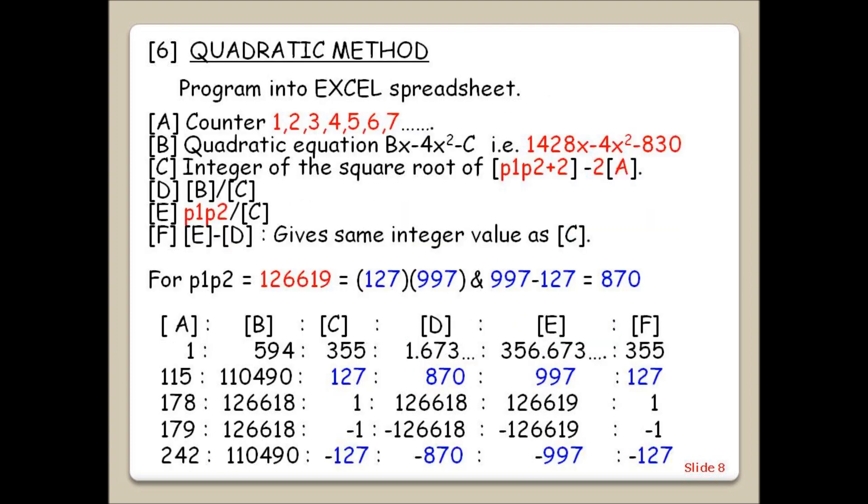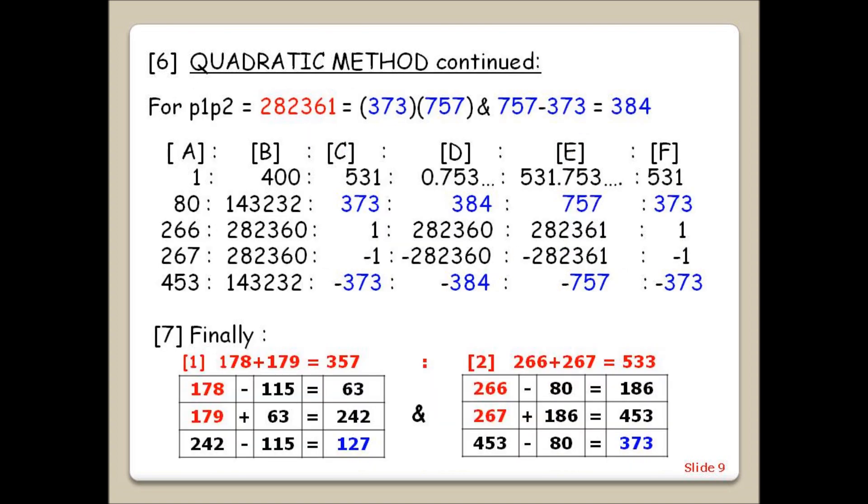This and the next slide show the output for the quadratic equation programmed into Microsoft Excel. And again, we only get the integer results shown when the number of steps is the same as trial division and when the other criteria are satisfied.